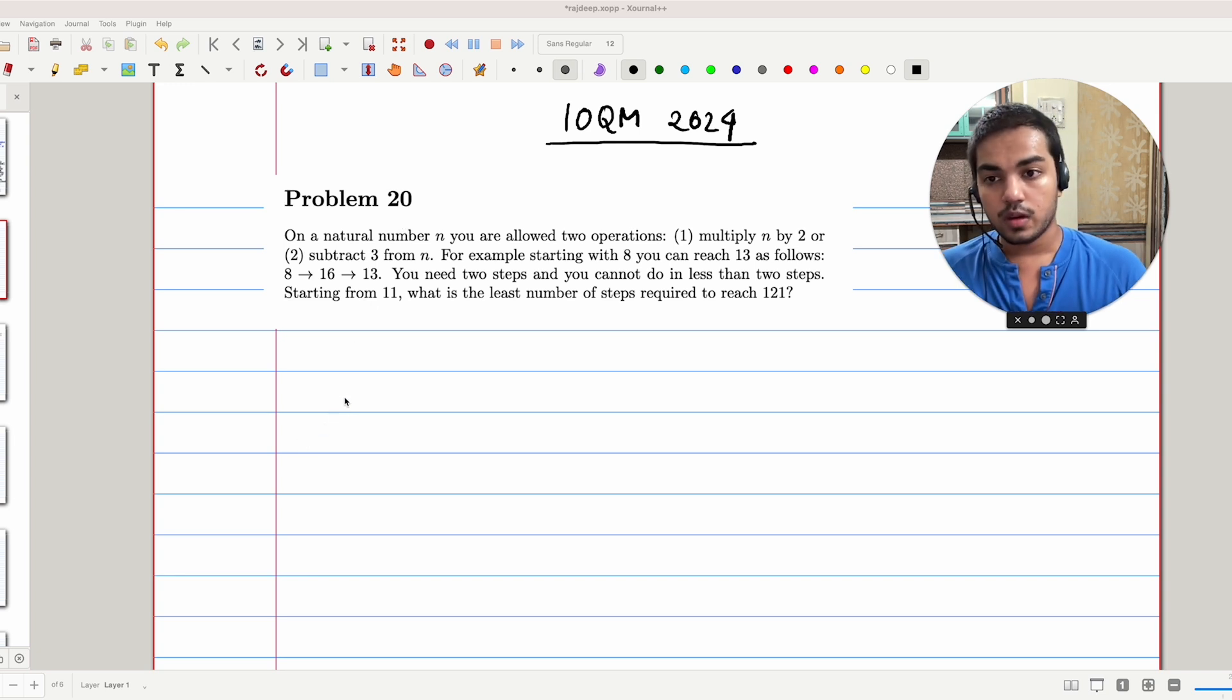Today we will be looking at problem number 20 from IOTM 2024. We are given a natural number N, and we are allowed two operations: multiply it by 2 or subtract 3 from it. For example, starting from 8, you can reach 30 by doubling it and then taking 3 away from it. You need two steps and you can't do it in less than two steps. Starting from 11, what is the least number of steps required to reach 121?